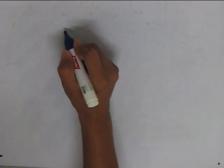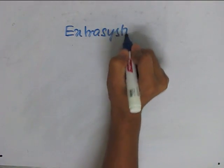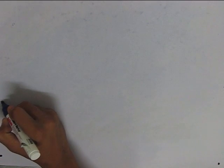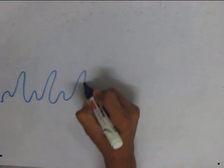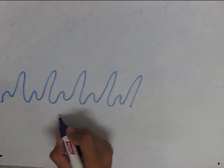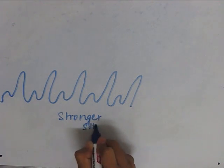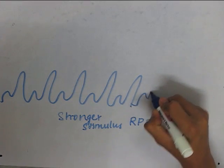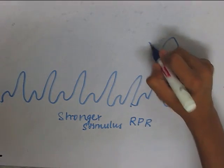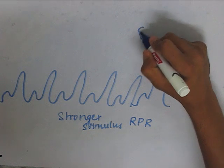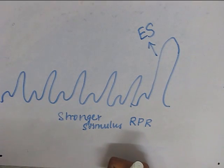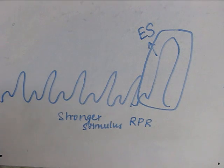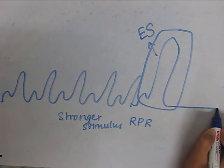The next important property is extrasystole and compensatory pause. Suppose these are the contractile responses to stimuli produced by the normal SA node. When a sufficiently stronger stimulus is applied to a cardiac muscle during the relative refractory period, there is an extra and earlier contractile response — this is known as the extrasystole. The natural stimulus arising from the SA node then falls in the refractory period of the extrasystole, so it cannot evoke a contractile response, resulting in a compensatory pause.